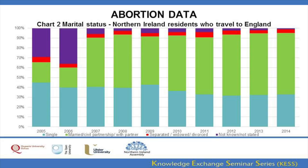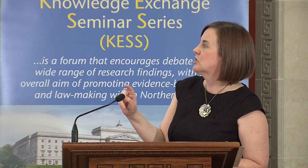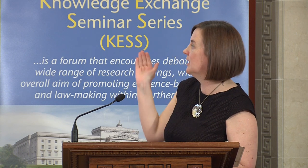Looking at the marital status of those who travel: single women generally amount to between 30 and 40% of those who travel. However, the main category in the most recent years is those who are married, in a civil partnership, or with a partner. The first two years of the reporting period — 2005 and 2006 — did not collect this category on a consistent basis, but the remaining years show the majority of those who travel are married, in a civil partnership, or with a partner.